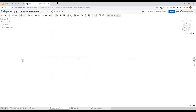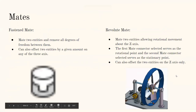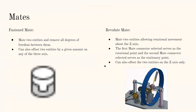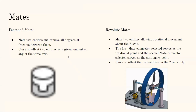If everyone's good, we can move on to mates. The fasten mate essentially mates two entities together and removes all degrees of freedom between them. You can offset entities, but once you've done that the parts are stationary. If one piece moves, the other moves with it exactly.